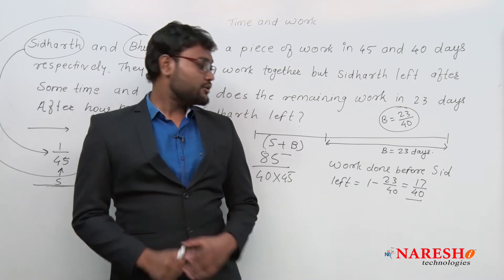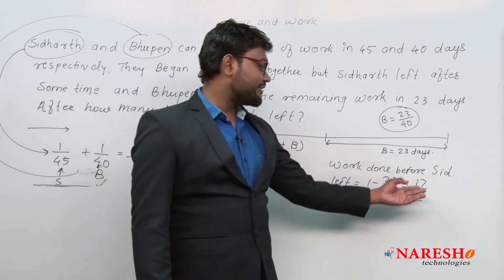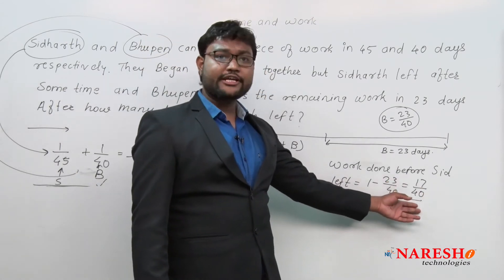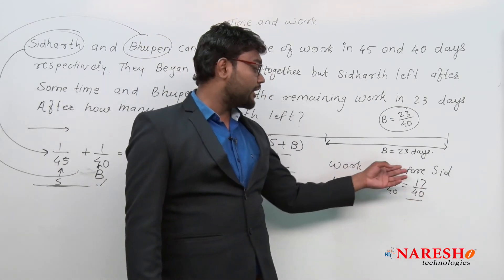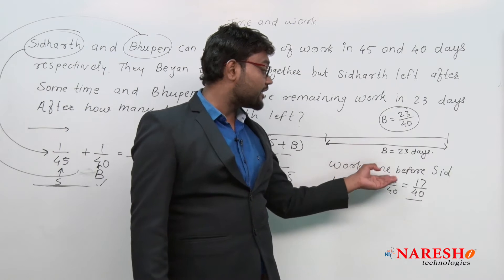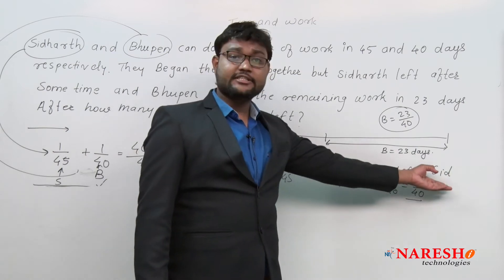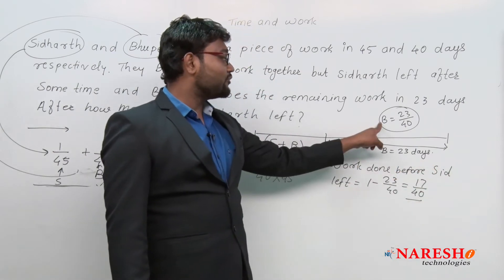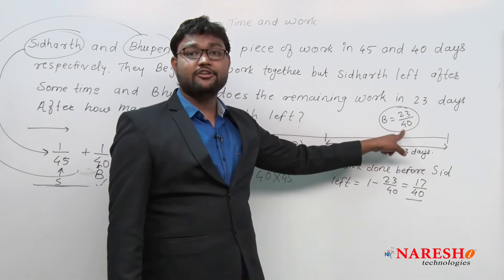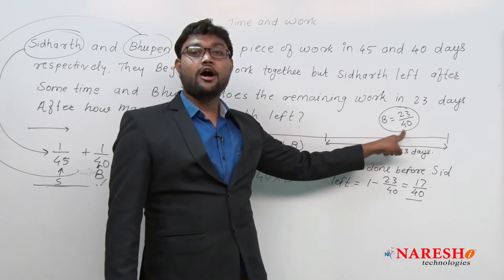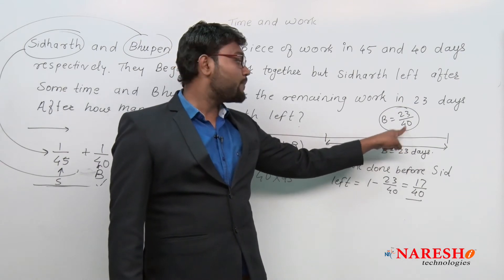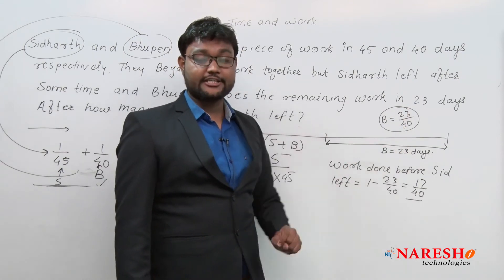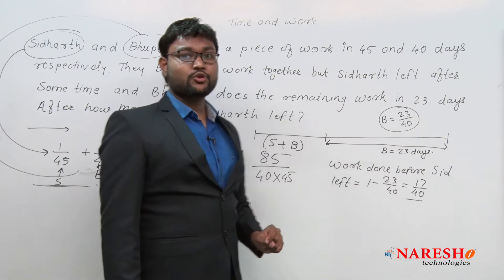So 17/40 is the work done before Siddhartha left, and 23/40 is the work done by Bhupen for 23 days.